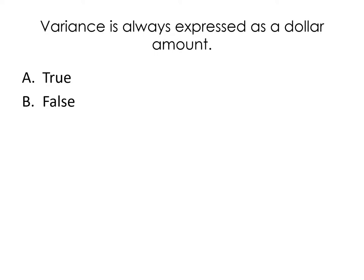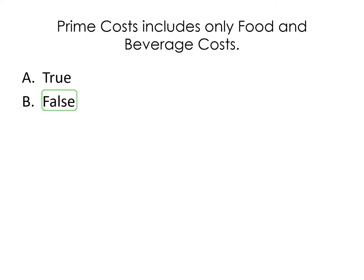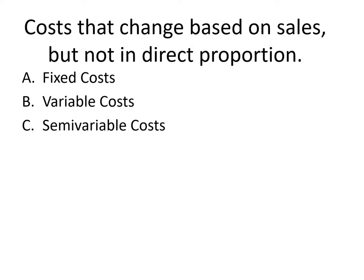Variance is always expressed as a dollar amount — true or false? That is false. It can be a count — the number of steaks — or a weight. For example, if you should have used 200 pounds of potatoes but your waste sheet shows 10 extra pounds wasted, you actually used 210 pounds. That variance is in weight, not just dollars. Prime cost includes only food and beverage cost — true or false? That is false; it also includes labor.